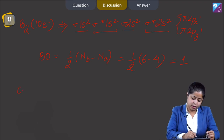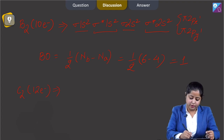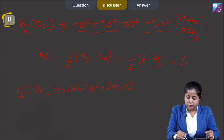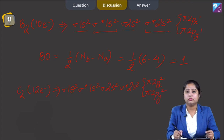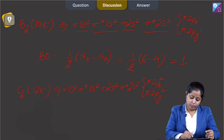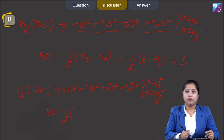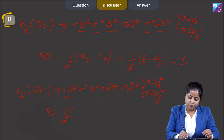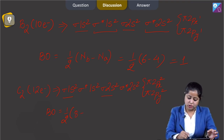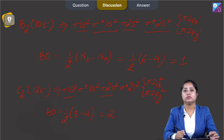Moving to C2, which has 12 electrons. The electronic configuration is: sigma 1s², sigma* 1s², sigma 2s², sigma* 2s², then pi 2px² and pi 2py². Bond order equals half of (bonding electrons: 2+4+6+8=8, minus antibonding electrons: 4), which equals 2.